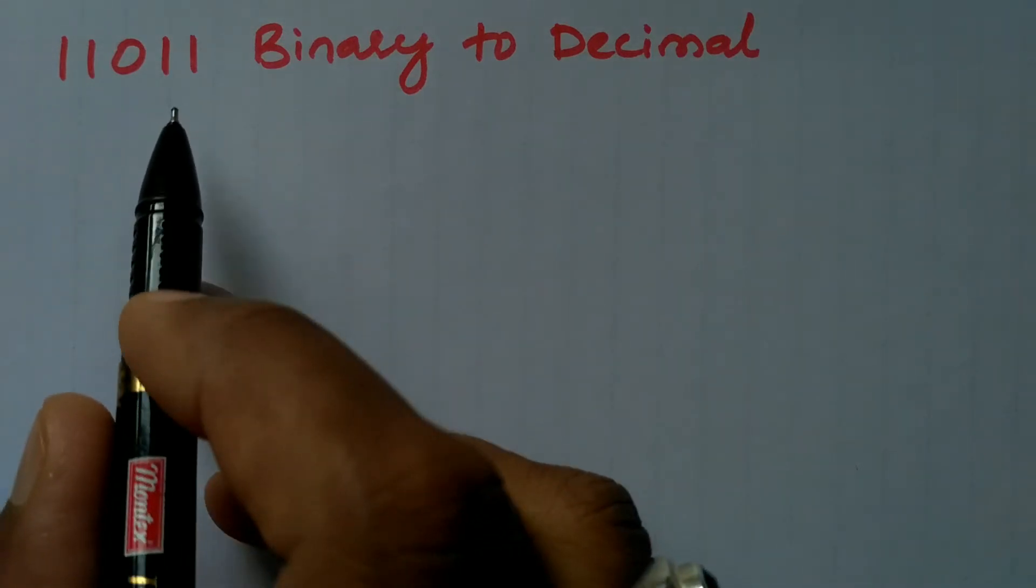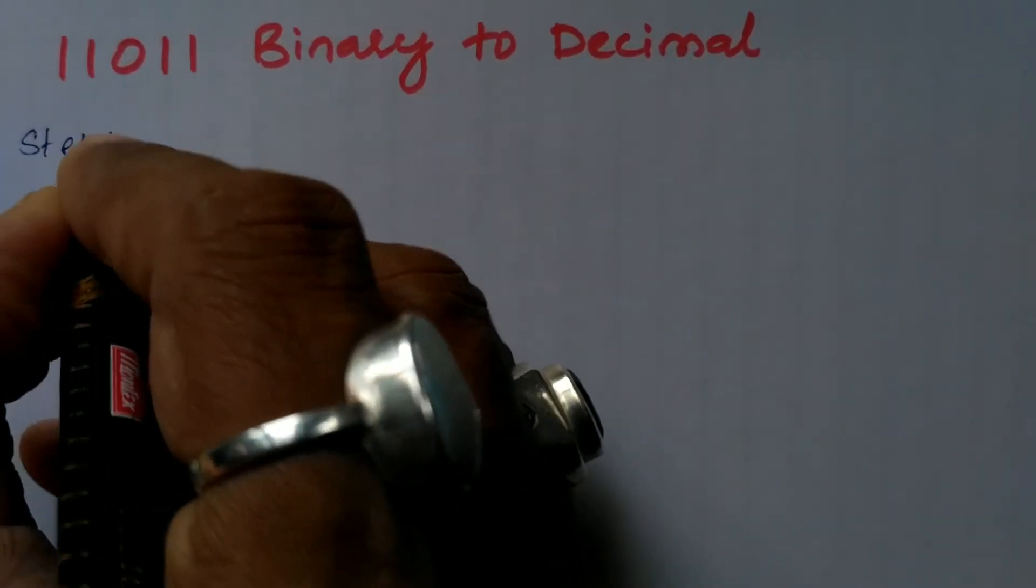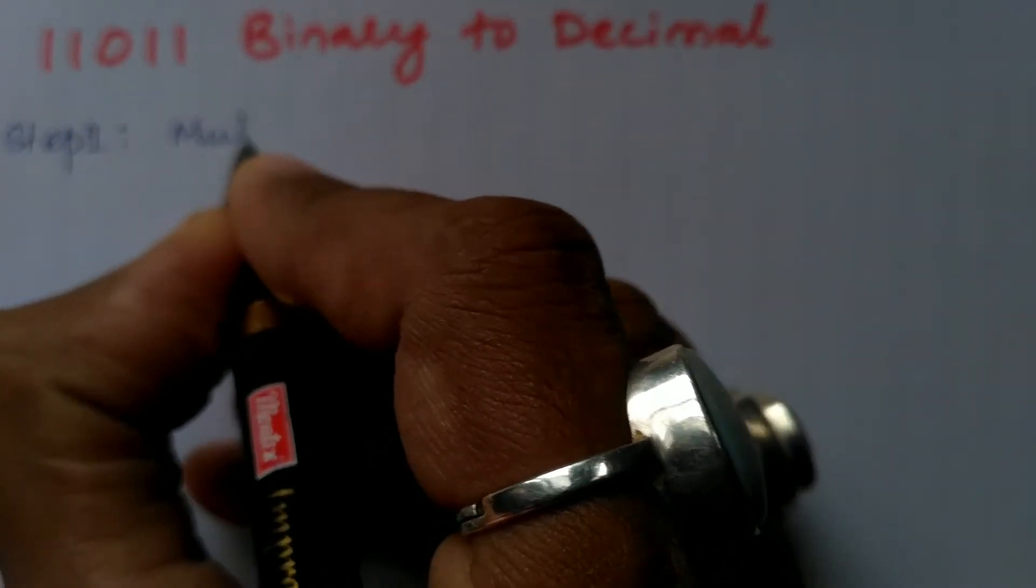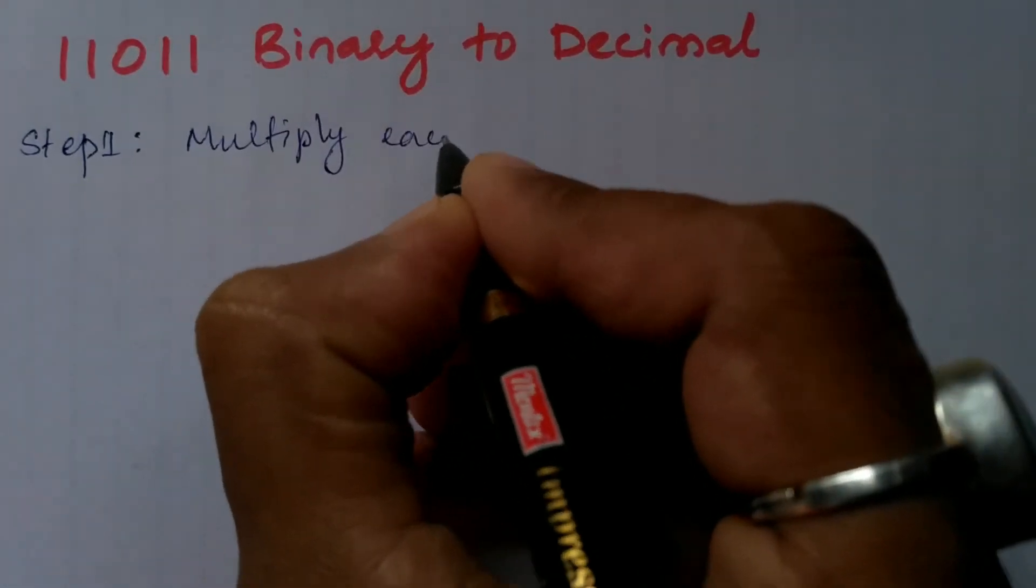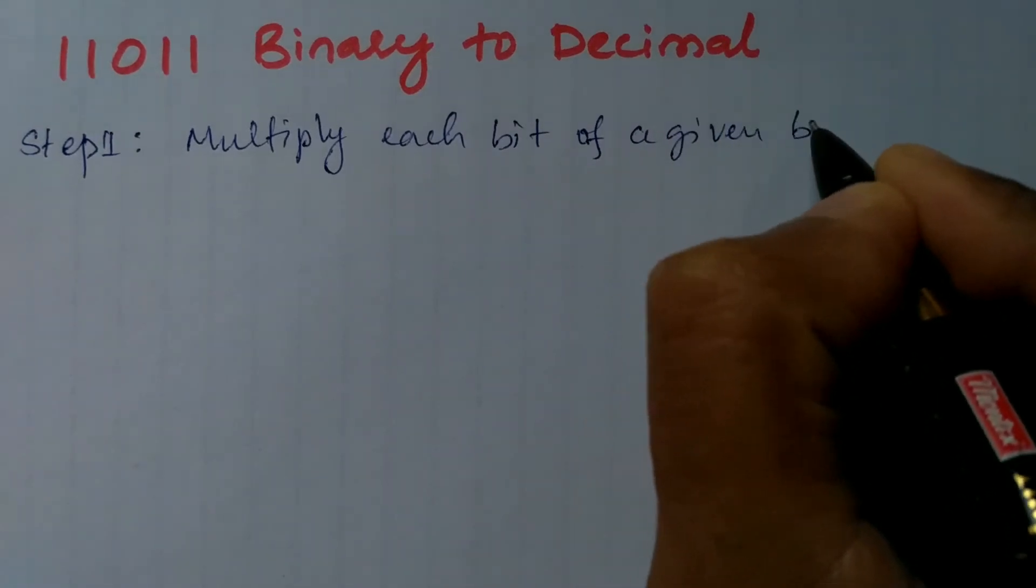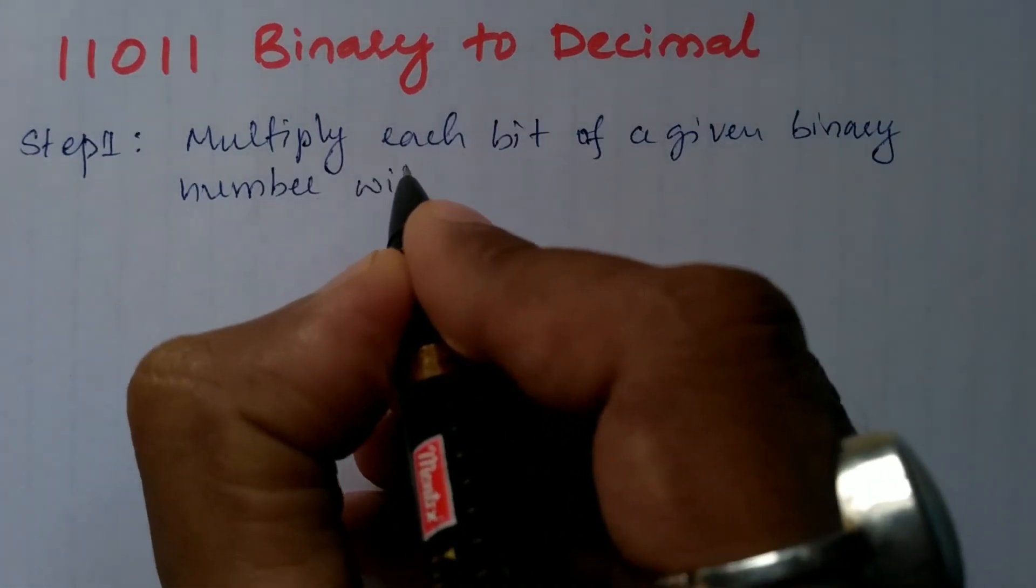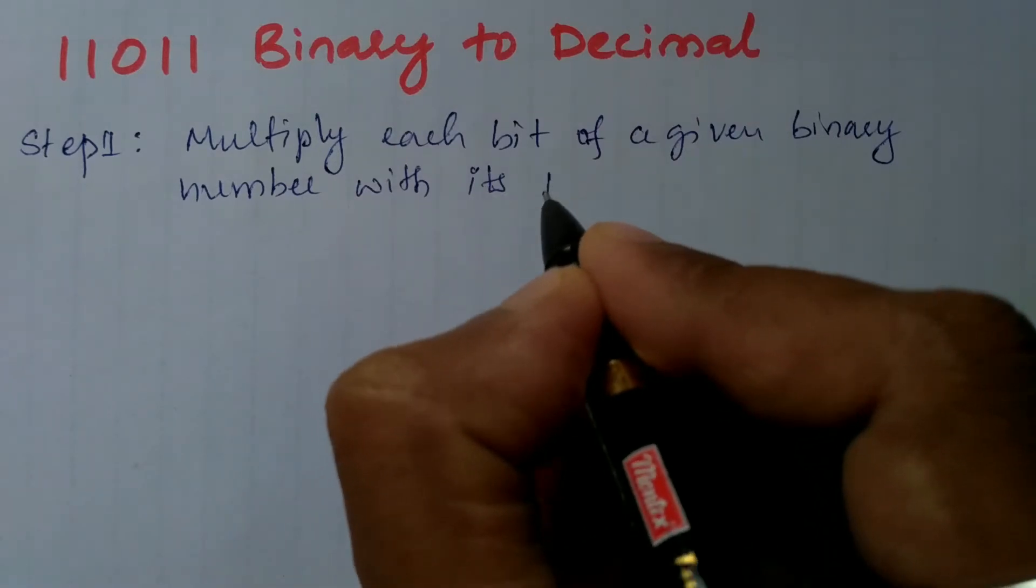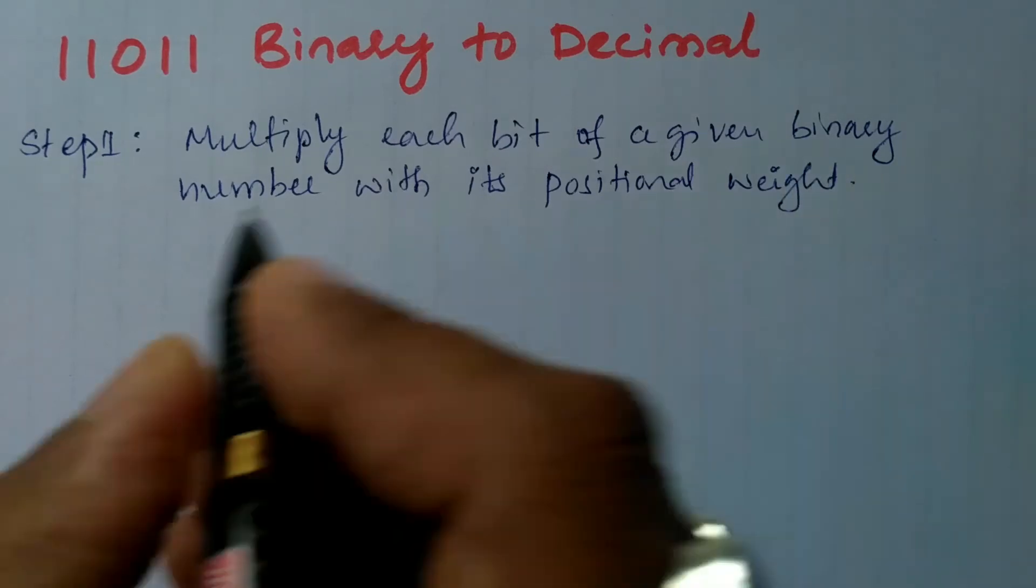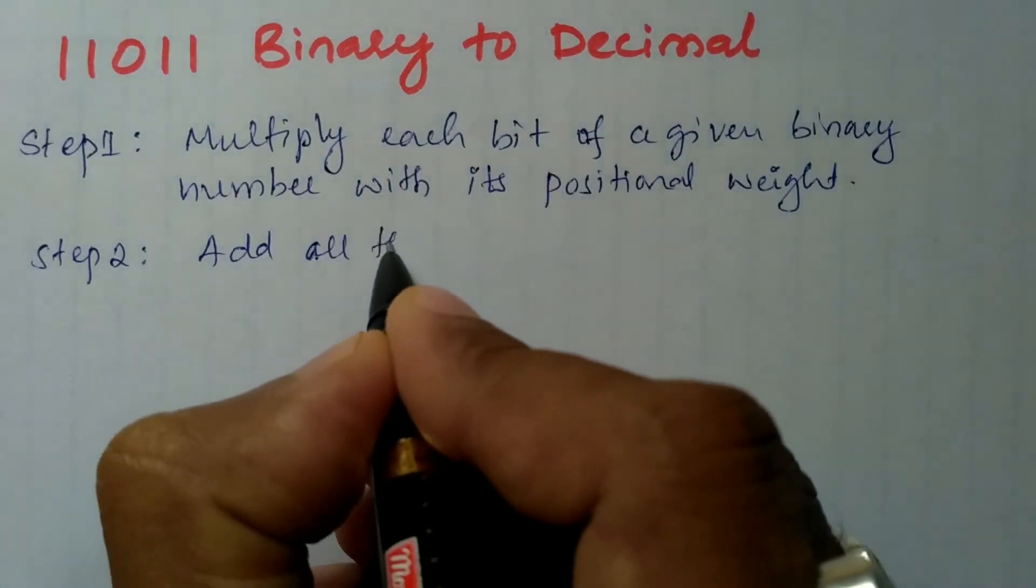In order to convert this given binary number to decimal number, let us write the steps. Step 1: Multiply each bit of a given binary number with its positional weight. Step 2: Add all the products.